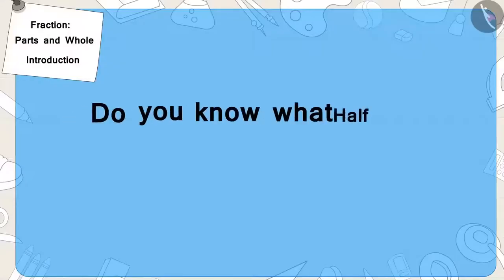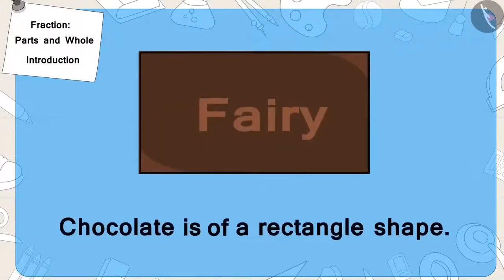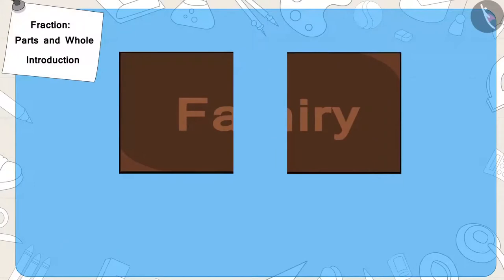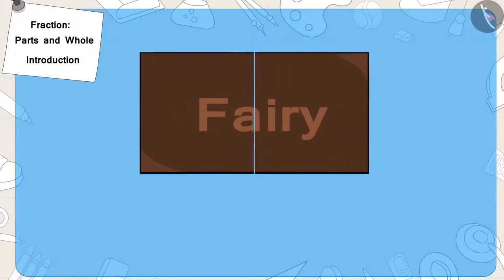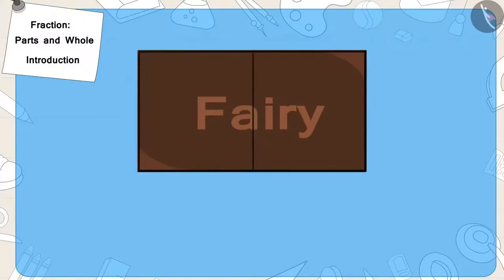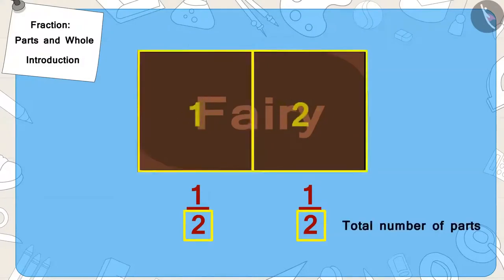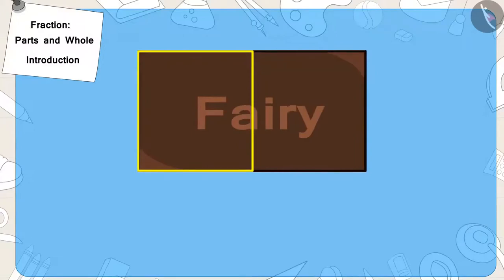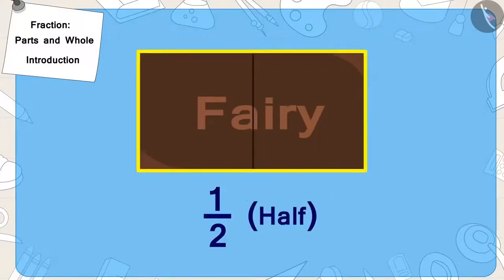But in return, he would have to give him half of the chocolate. Children, do you know what half is? Suppose Bunny's chocolate is of a rectangle shape. If we divide it into two equal parts, this part is one part of these two equal parts. We can write it as a fraction. Here, two is the total number of parts and one is one part of those two equal parts.